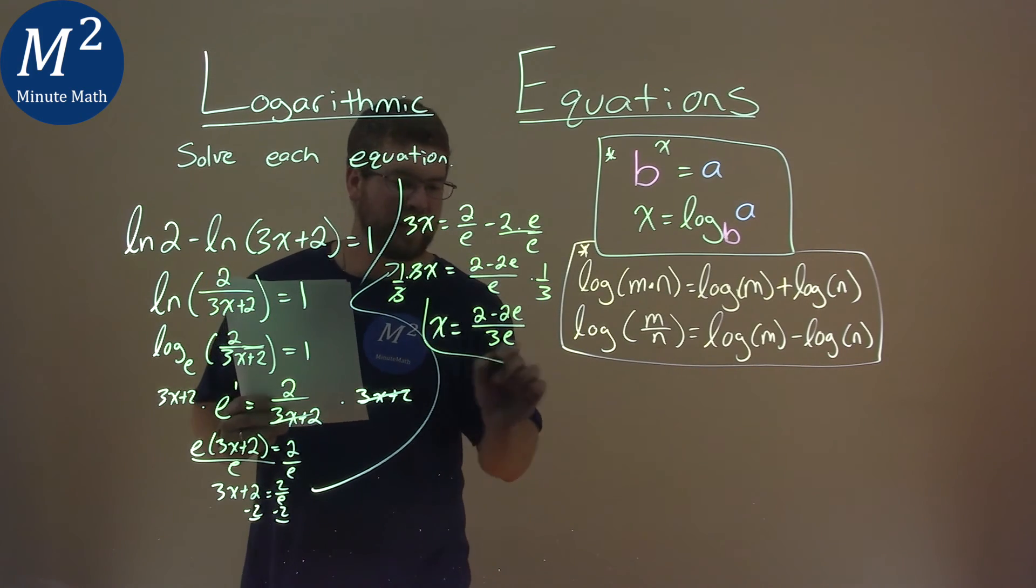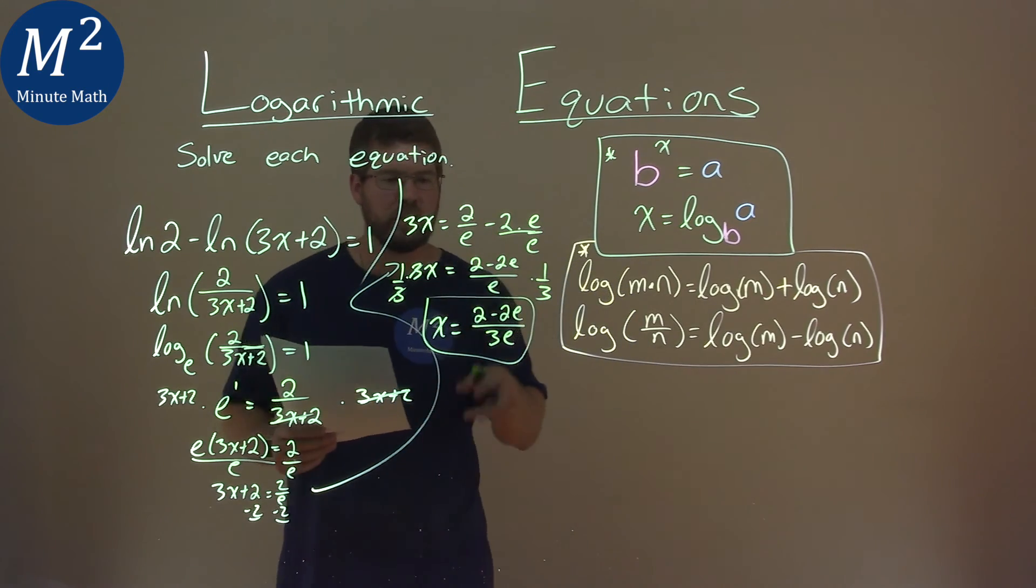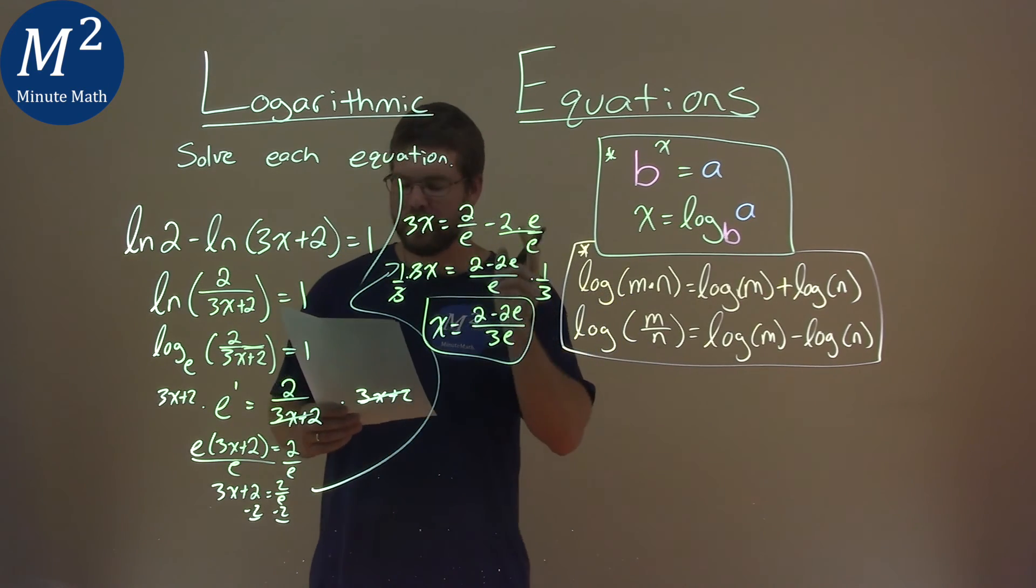Either way, our final answer here, there's nothing really more we can do to simplify this, is x equals 2 minus 2e over 3e.